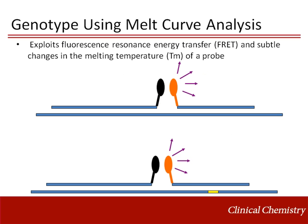There are several genetic methods to detect deficiency alleles. Some, such as gene sequencing, will detect all mutations. Rapid genetic methods only detect the most common deficiency alleles, but have been utilized for their high throughput capacity and cost efficiency. In general, rapid genetic analysis is accomplished using melt curve analysis in a light cycler instrument. This technique utilizes fluorescence resonance energy transfer, or FRET.